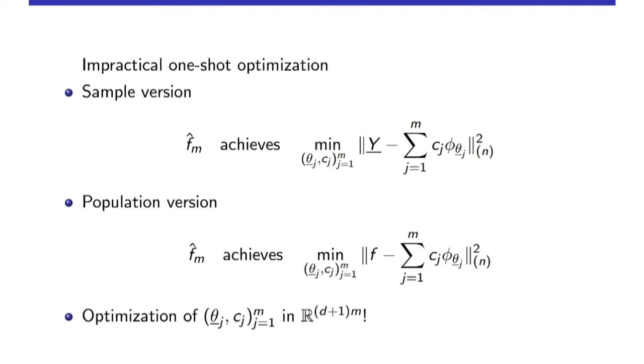The impractical way of doing this is a one-shot approach where you simultaneously try to minimize the squared error criterion over all the thetas and all the C's. That's not feasible because of the optimization problem — it's a D times M dimensional optimization problem. M also plays a role in the accuracy of the approximation: the larger M is, the better the approximation error, but there's a trade-off between statistical error and approximation error.